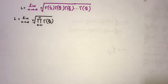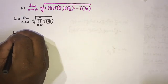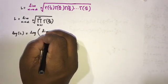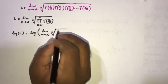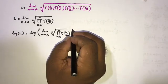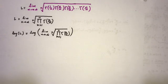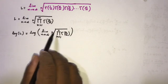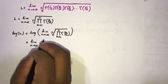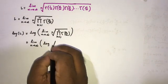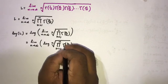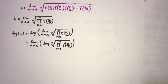Next, I take the natural log of both sides. So we write: natural log of L equals the natural log of the limit as n approaches infinity of the nth root of the product from k equals 1 to n of gamma(k/n). Since we can interchange the limit and the log, we bring the natural log in front.